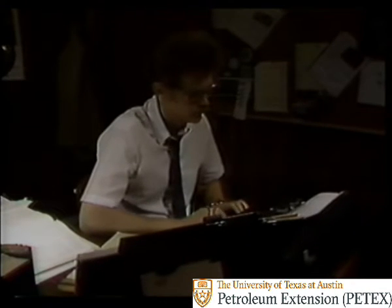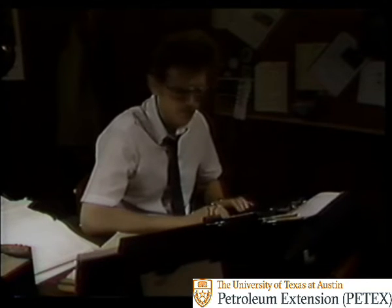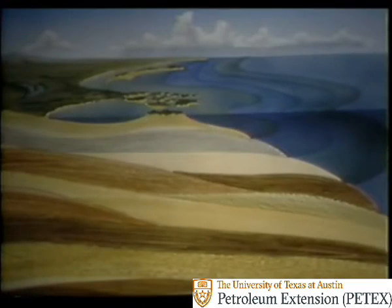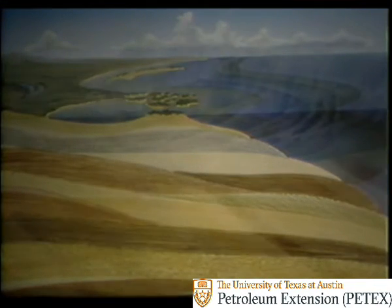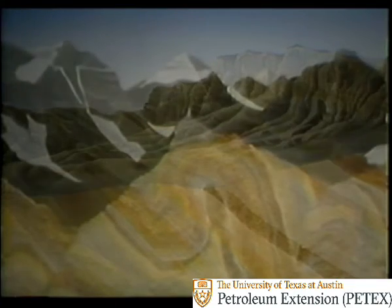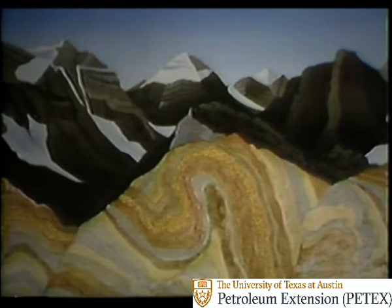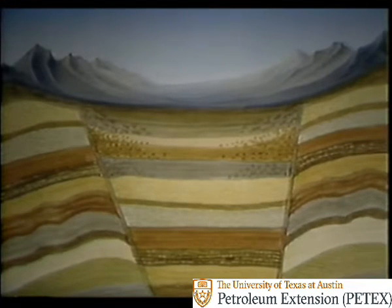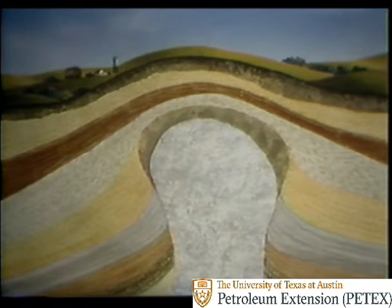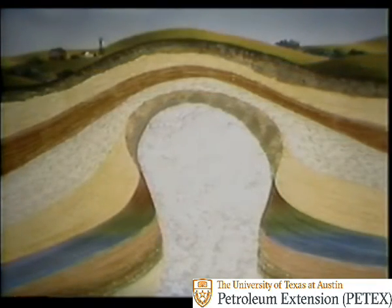That's one type of trap, but there are others. During the millions of years that the sedimentary layers were forming, other geologic events were also taking place — the earth's layers were tilting, folding, and breaking apart. The result was that the original layers were broken up, deformed, and pushed out of place. Some of these rock layers are relatively impermeable, so fluids can't migrate through them and they form traps, blocking the continued migration of the hydrocarbons.